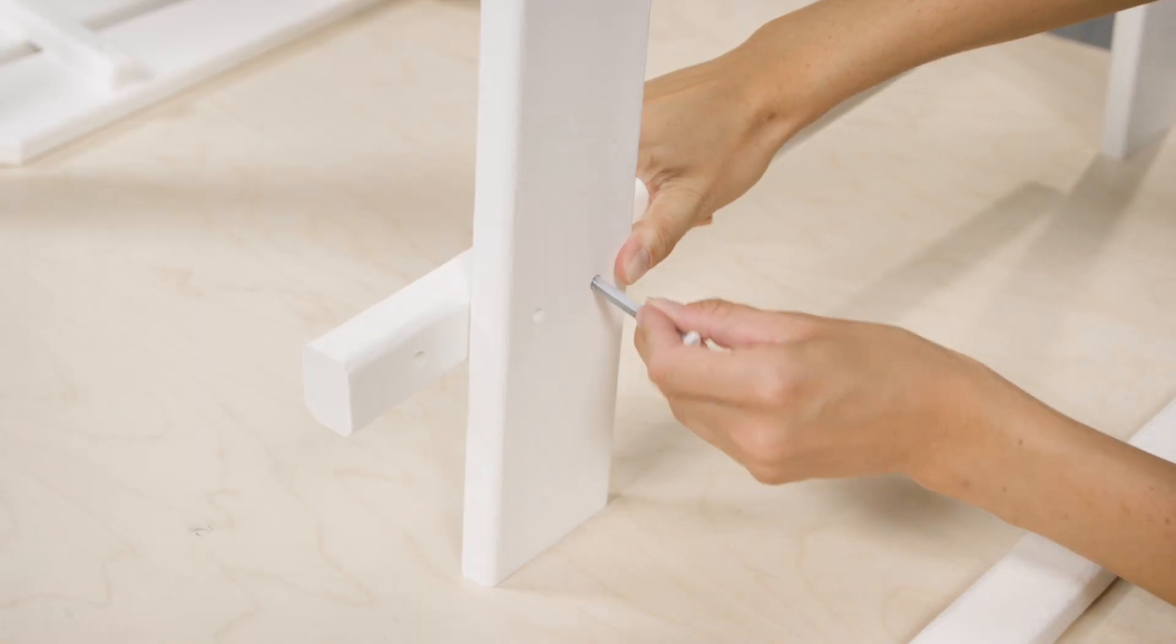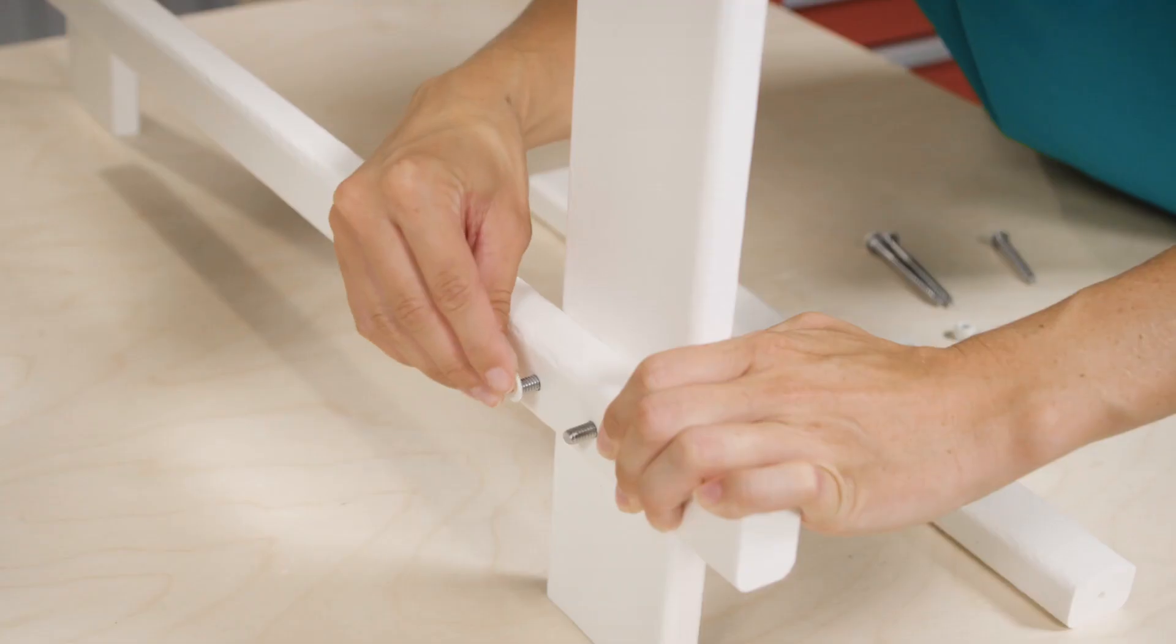Attach the left side brace to the front left leg using two 2 1/4 inch bolts with two nuts and two washers as shown.